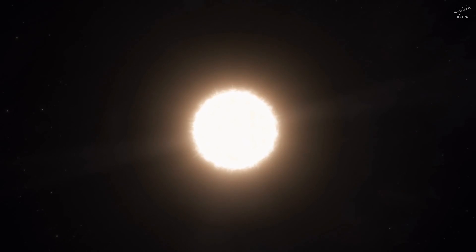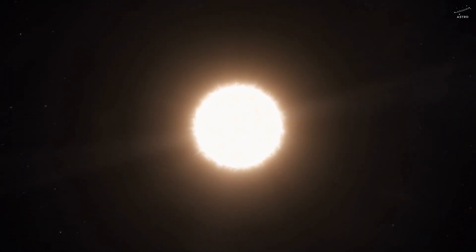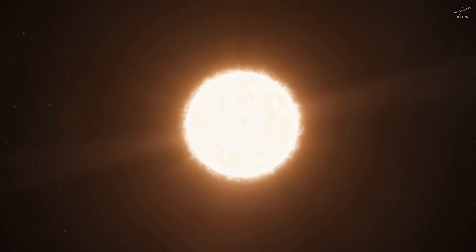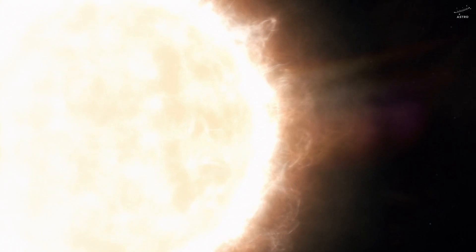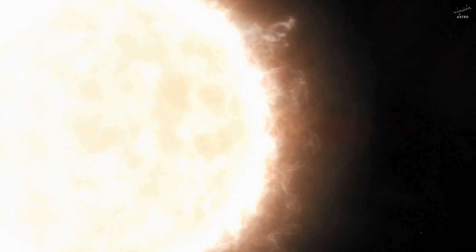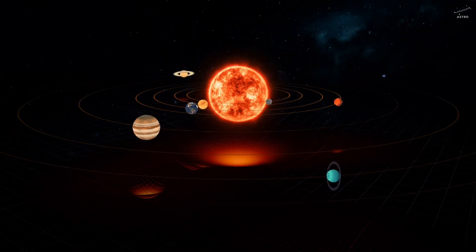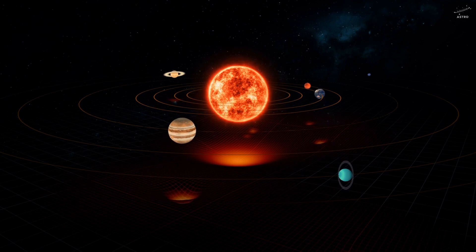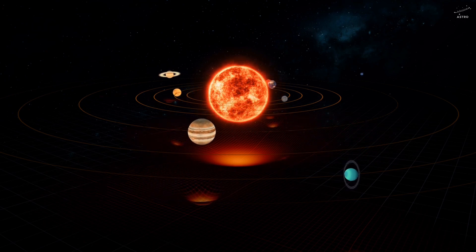As the sun begins to expand into a red giant, something else starts to happen. It's not just growing in size, it's losing mass. Every second, intense solar winds carry millions of tons of material into space. And with every particle that escapes, the sun's gravitational grip weakens. For billions of years, that gravity held the planets in place. But now, everything begins to shift.